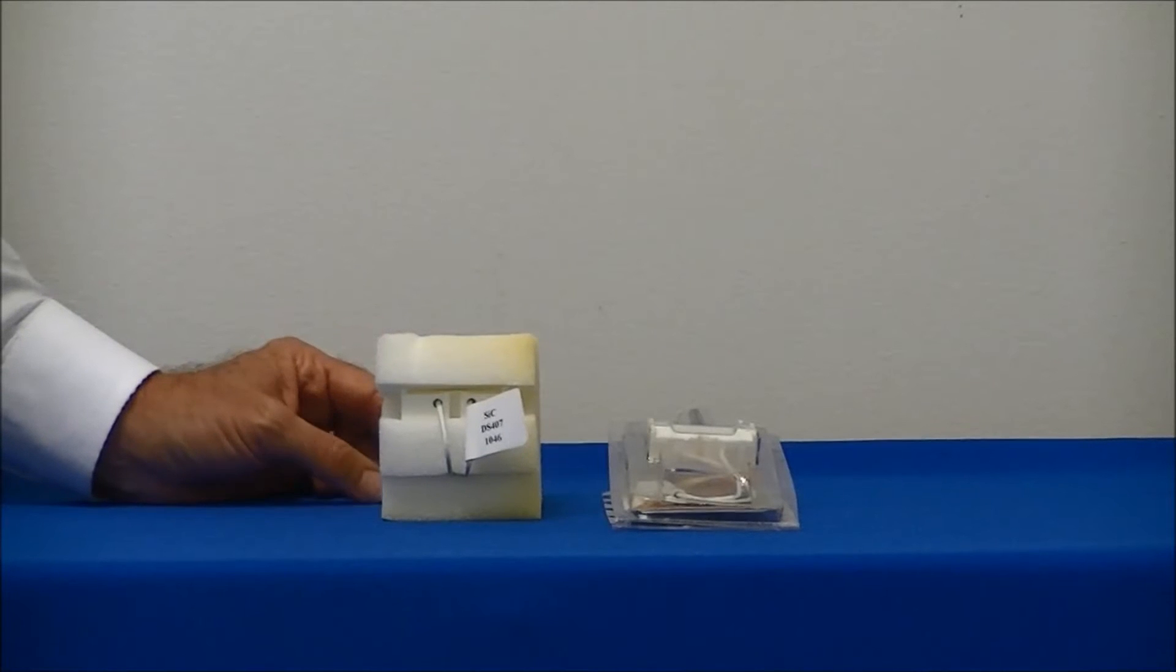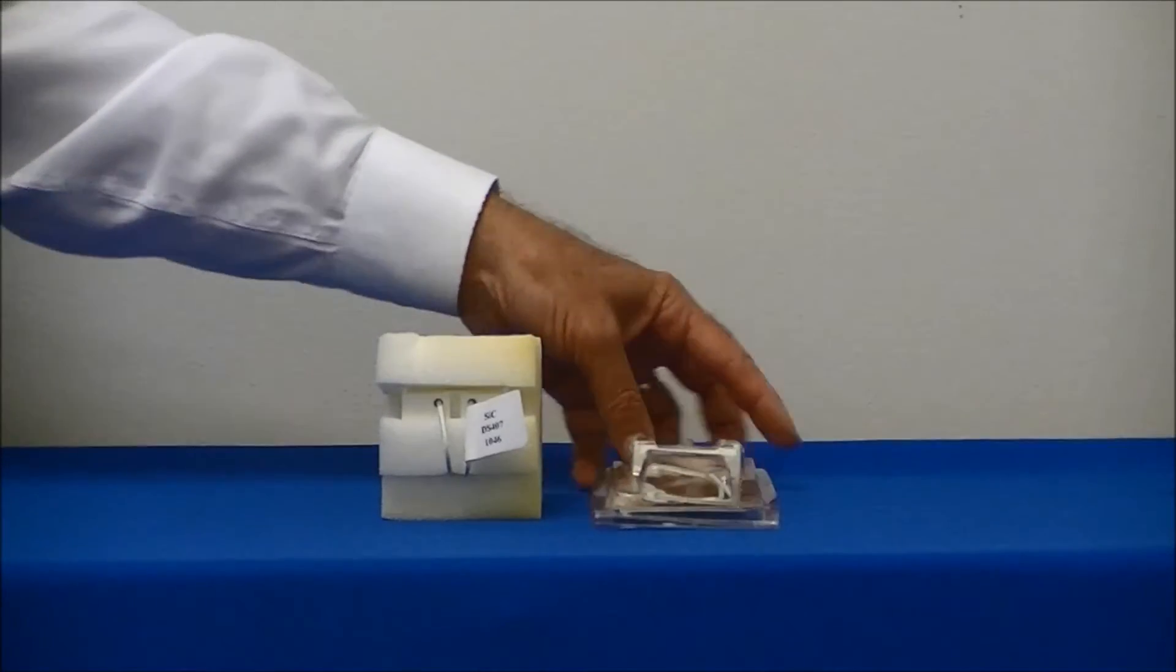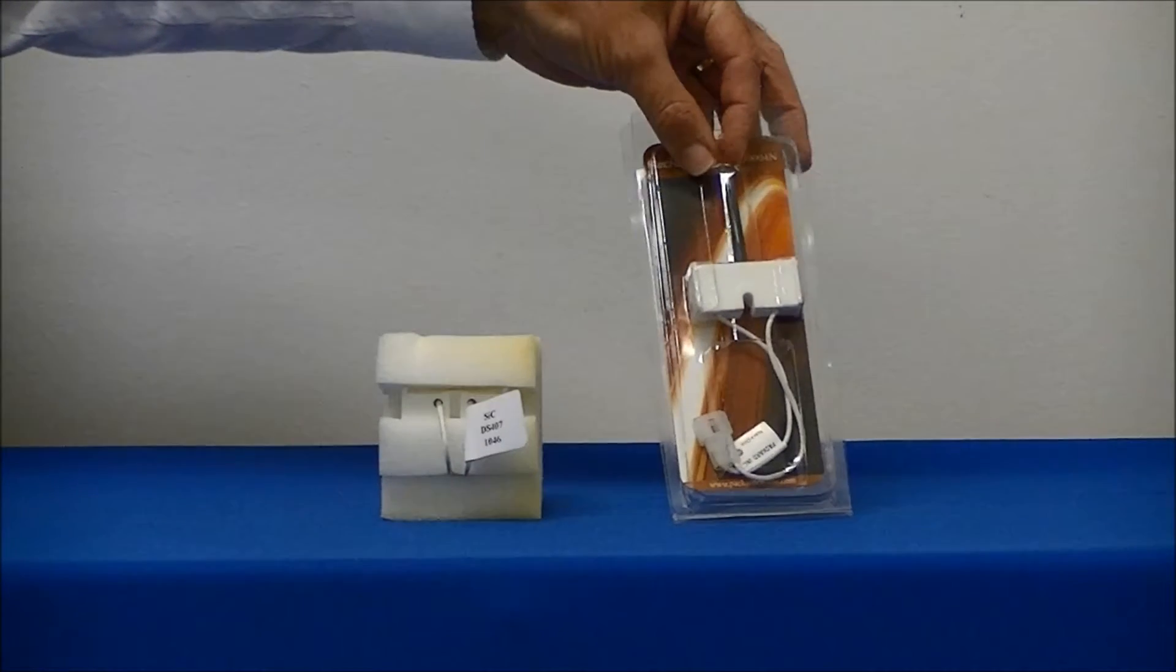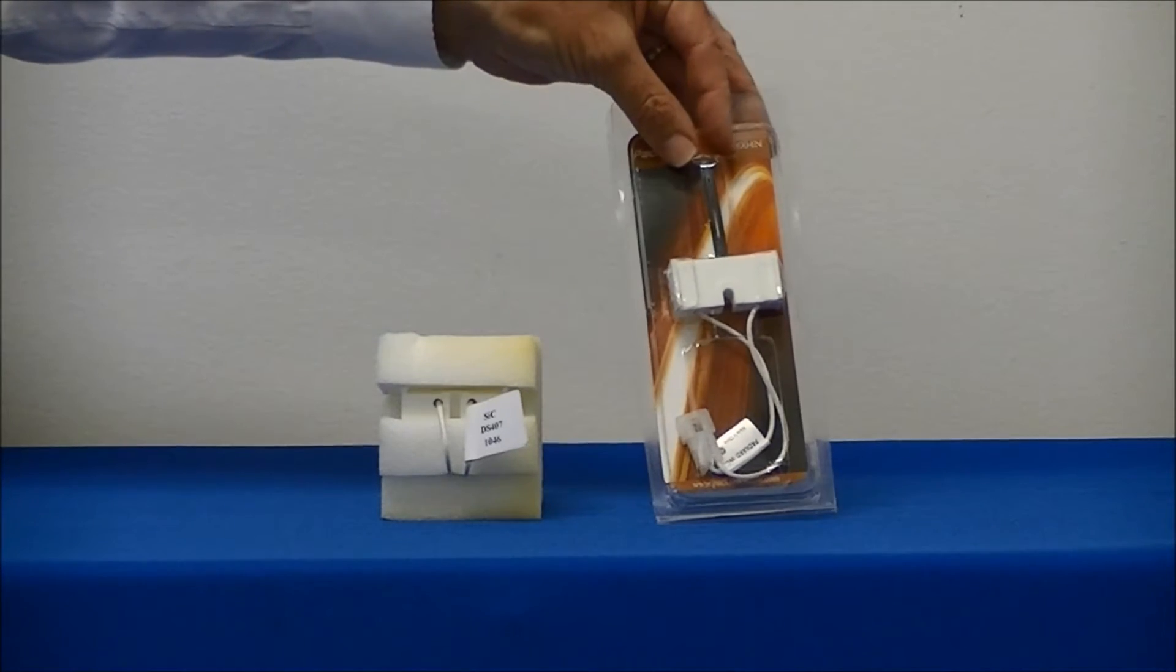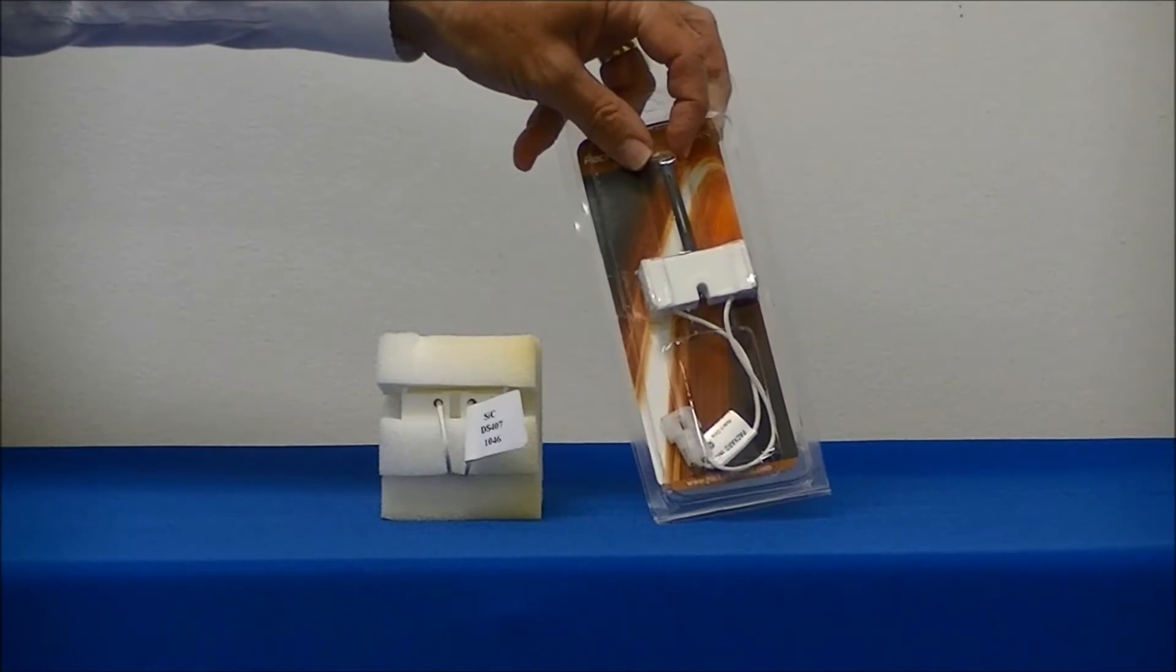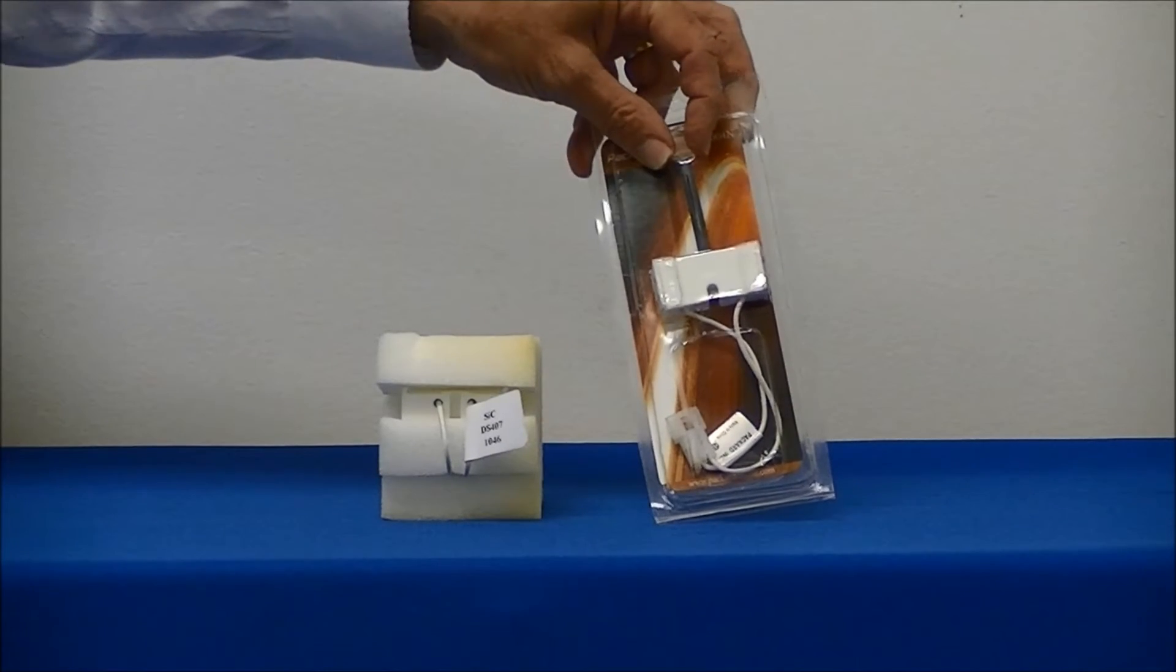The igniters are referred to as hot surface igniters. That's because the actual surface of the igniter becomes extremely hot when igniting the gases in the furnace. It will become white hot, actually glow white.